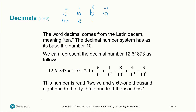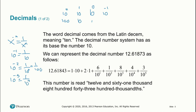After the decimal we get negative powers of ten. We know that x to the power of negative n equals one over x to the n, so ten to the negative one is one over ten, ten to the negative two is one over a hundred, and ten to the negative three is one over a thousand. So the tenths place is ten to the negative one, the hundredths place is ten to the negative two, and the thousandths place is ten to the negative three.